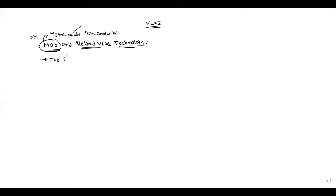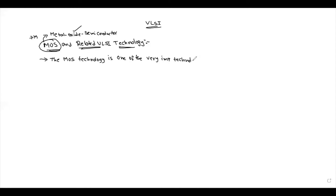The MOS — Metal Oxide Semiconductor technology — is one of the very important technologies in VLSI design. MOS technology is one of the very important technologies in the VLSI design process.